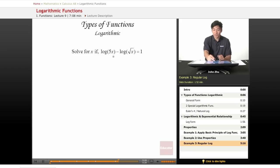So if we have two log terms that are subtracting each other, we know that by the log property that becomes log of 5x over square root of x equals 1.